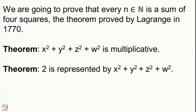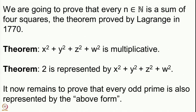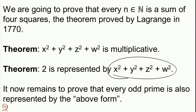We start with the first prime p = 2, and we saw in the last lecture that 2 is represented by this form: you can write 2 as 1² + 1² + 0² + 0². Now the only thing that remains to prove is that every odd prime is also represented by the above form. We will just keep calling this form as 'the above form' or simply 'the form' in the next statements.